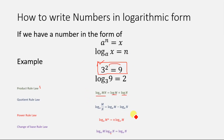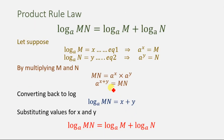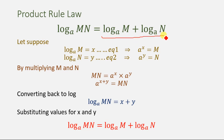The first rule is the product rule law. According to the product rule, log base a of mn equals log base a of m plus log base a of n. For proving this equation, look at the right-hand side, which has two terms: the first term is log of m and the second term is log of n.